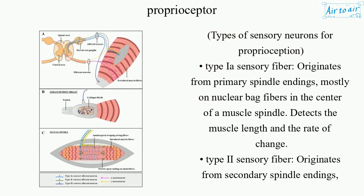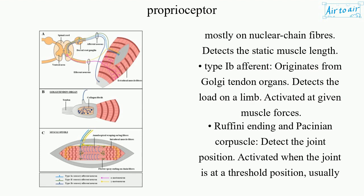Types of sensory neurons for proprioception: Type Ia sensory fiber originates from primary spindle endings, mostly on nuclear bag fibers in the center of a muscle spindle, and detects the muscle length and the rate of change. Type II sensory fiber originates from secondary spindle endings, mostly on nuclear chain fibers, and detects the static muscle length.